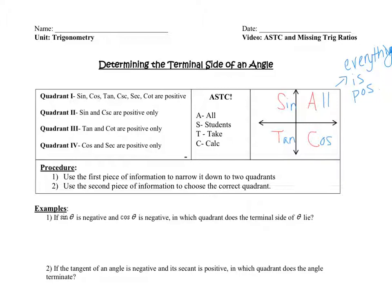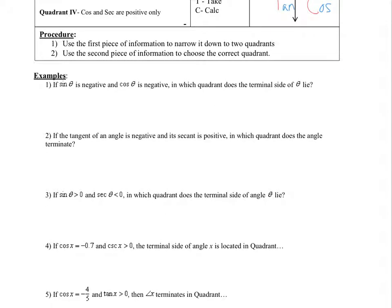Let's see how this relates to a problem. Example one: if sine is negative and cosine is negative, in which quadrant does the terminal side of the angle lie? We're going to draw a little ASTC chart — that's always where we start. This chart is for where everything is positive, so they're telling us sine is negative. A and S are where sine is positive, so those two quadrants are where sine is positive.